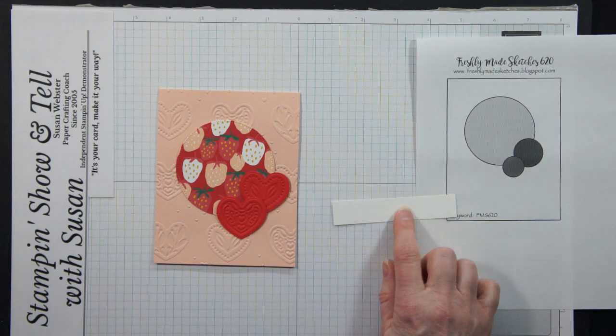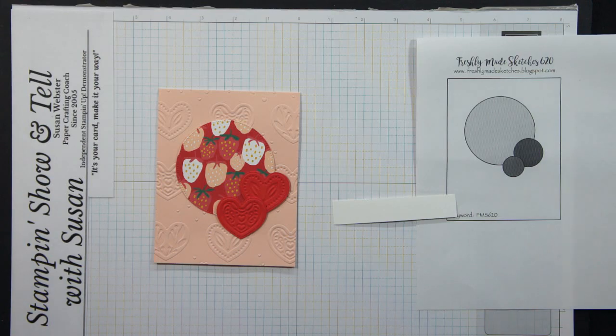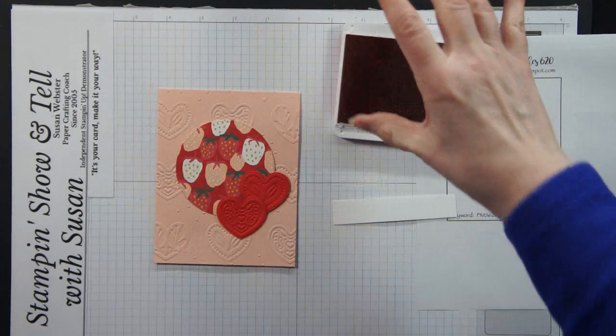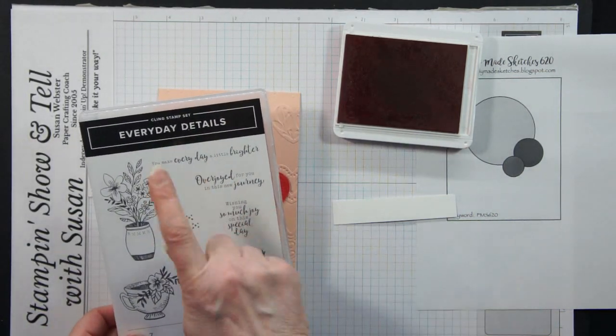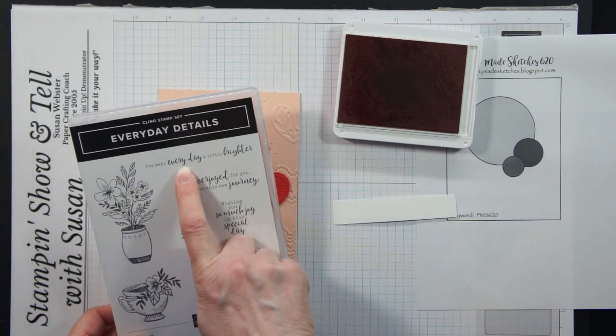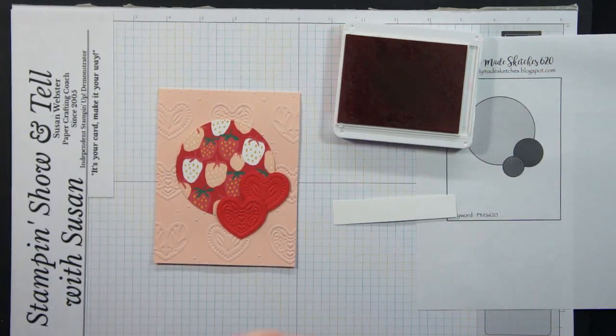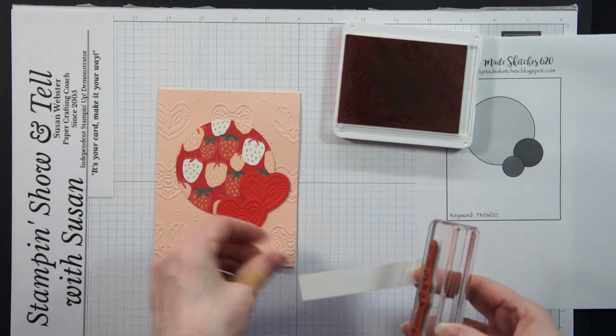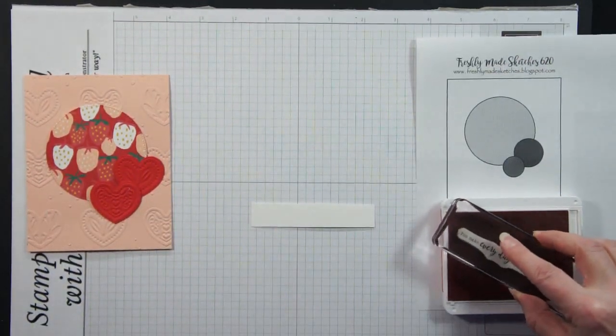So I've got my basic white and I'm going to bring in my Poppy Parade ink. Keep it all coordinating with the colors in the project and then I have a new stamp set to me, Everyday Details, and I like this sentiment right here. You make everyday a little brighter. So I'm going to use that one. So I'm going to stamp this on my basic white.